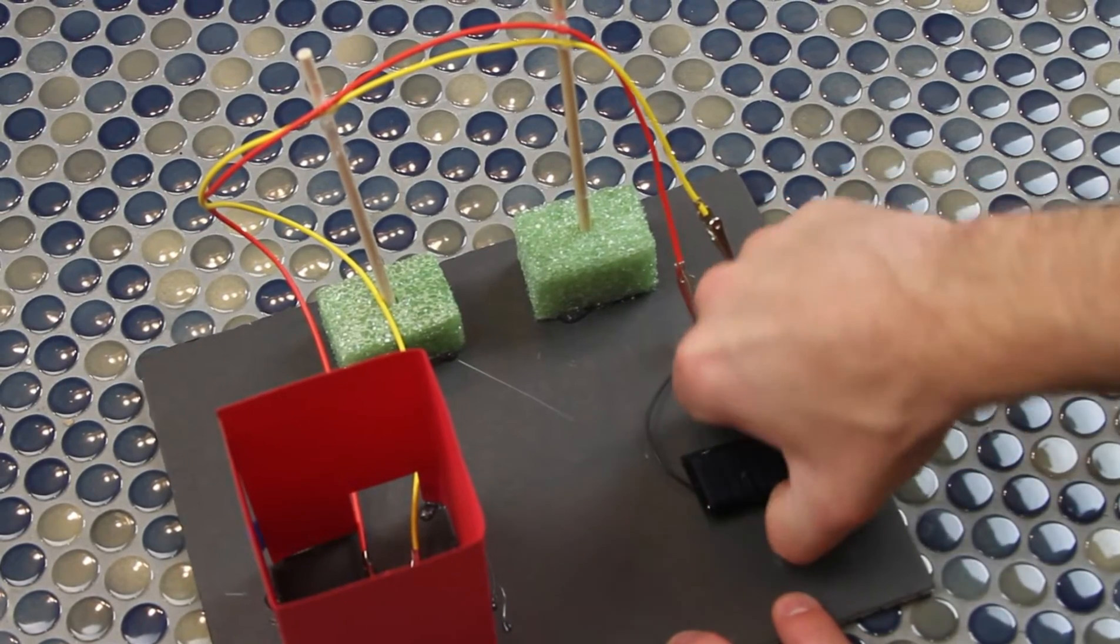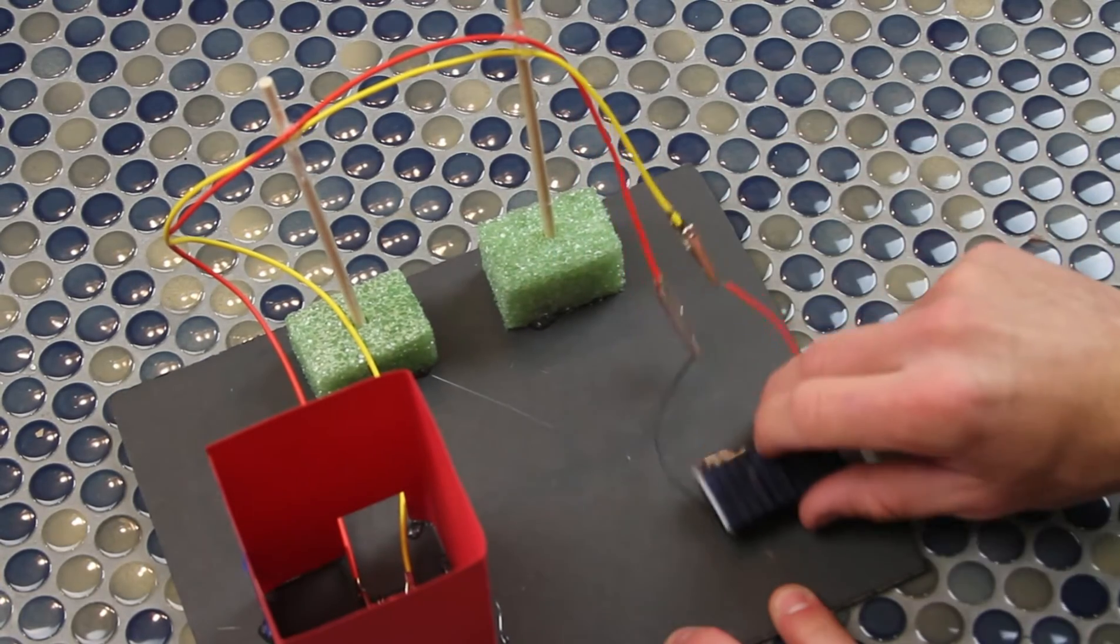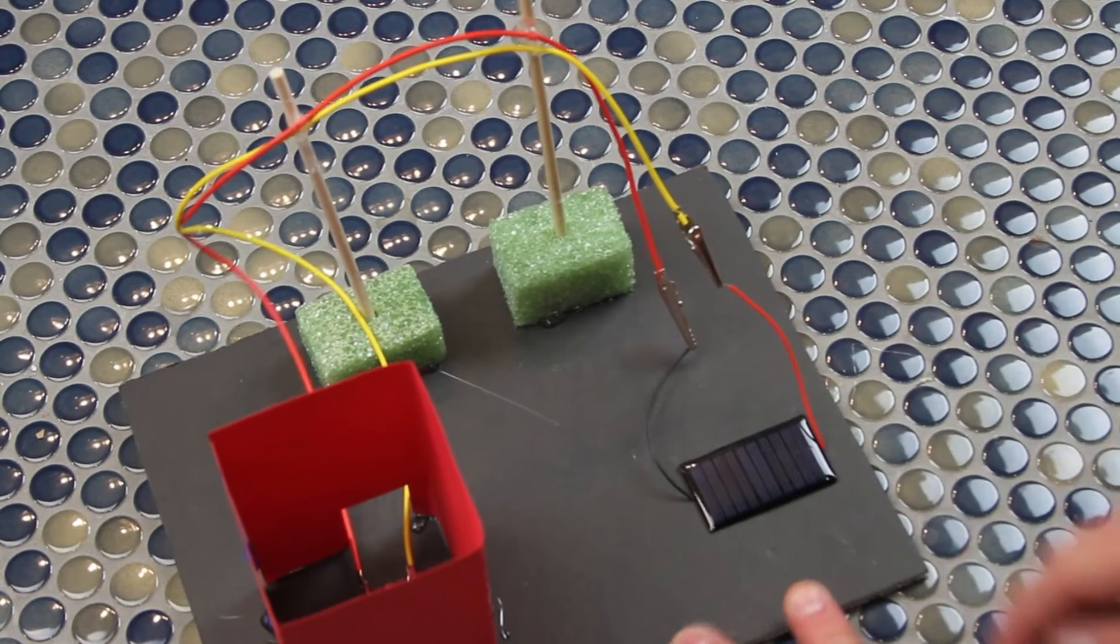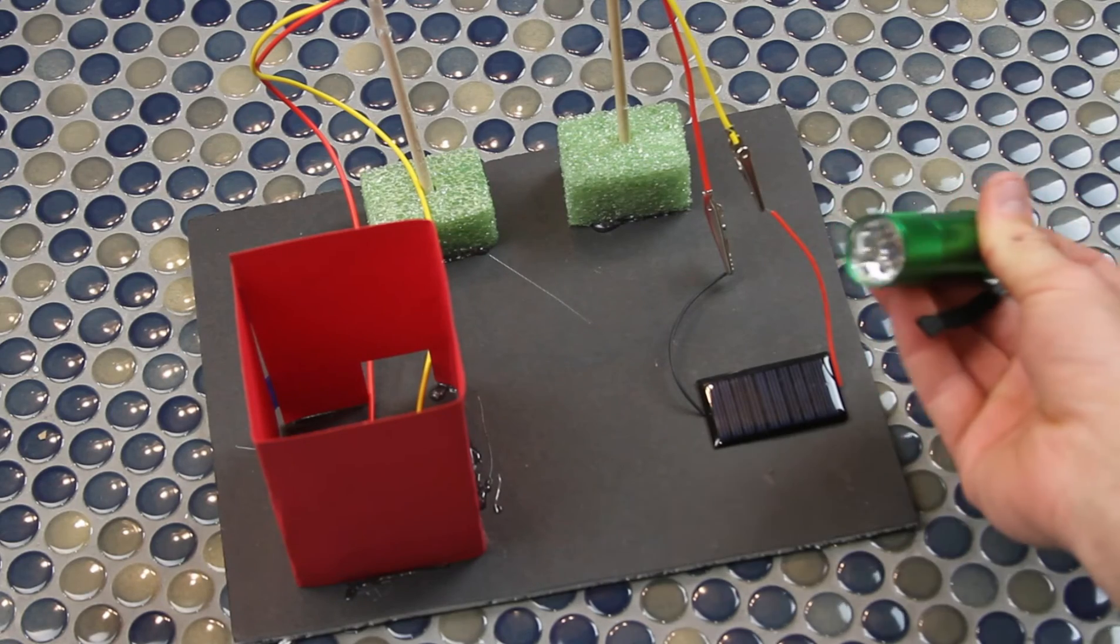If you remember way back to the beginning of the video, we put some glue dots underneath the solar panel. That's so we can move it around and change it if you ever want. If you'd like to pick it back up and put it on the roof of your new house, feel free to have some fun with it.